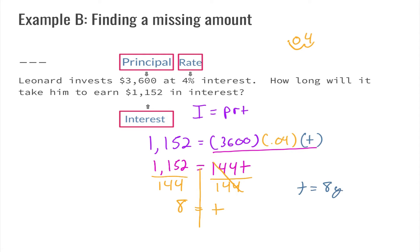Since I have a word problem I need a word answer: time equals eight years. Does the answer make sense? Leonard invests thirty-six hundred dollars at four percent interest — it will take him eight years to earn one thousand one hundred and fifty-two dollars in interest. That's a long time, but he's only earning four percent interest.